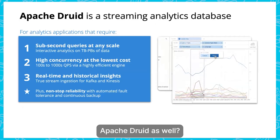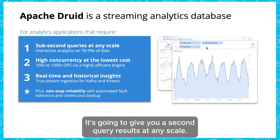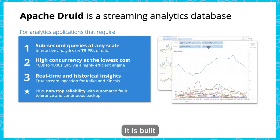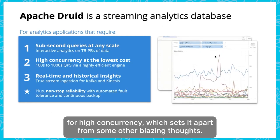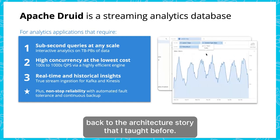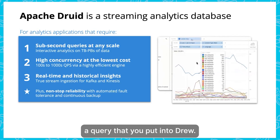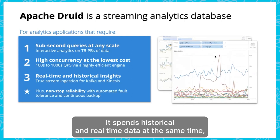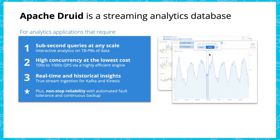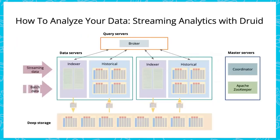Why is Apache Druid cool? It is an analytics-optimized database that works in real time. It can give sub-second query results at any scale, scales linearly with data, and is built for high concurrency — which sets it apart from other fast analytical data stores. It encapsulates a Kappa architecture: a query spans historical and real-time data at the same time, with built-in service discovery, built-in disaster recovery, and enormous scaling ability.